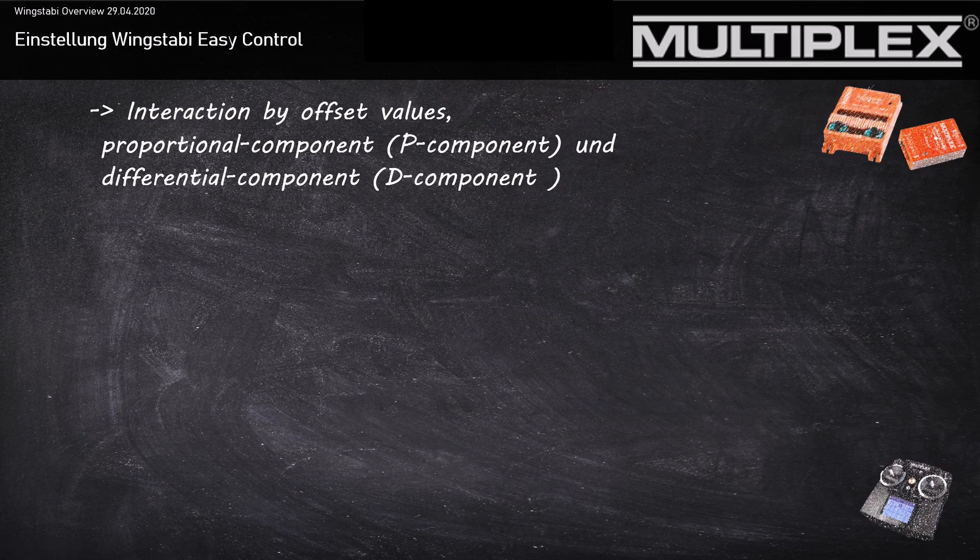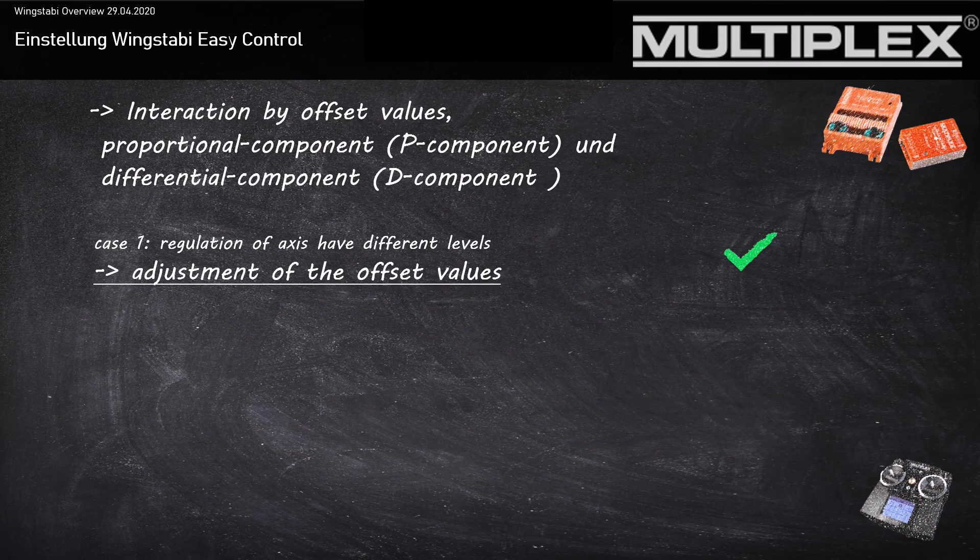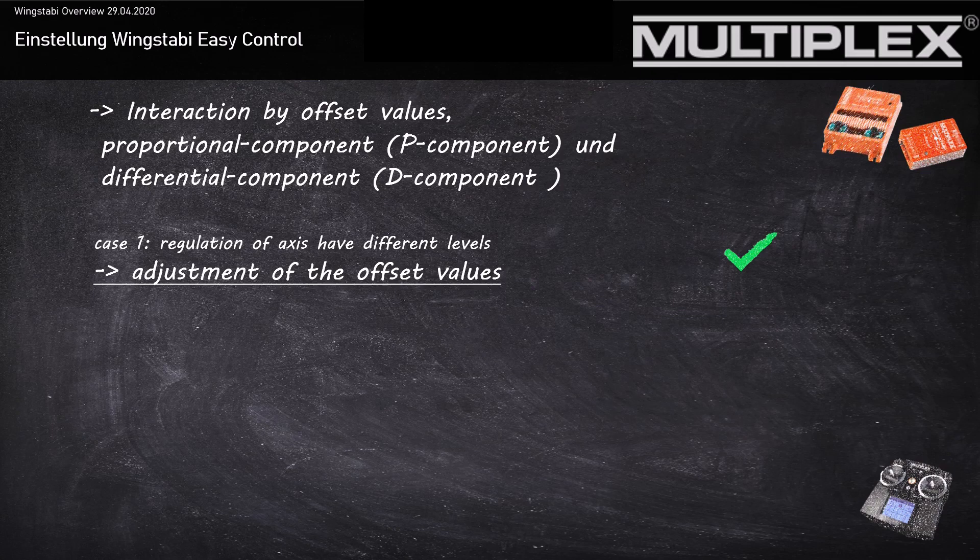Let's switch to the two left parameters of Wing Stubby Easy Control, the P-Rate and the D-Rate. I will show you with some easy examples how the interaction of the offset, the P-Rate and the D-Rate has an influence. So, case 1. Imagine your gyro control of your different steering functions are very different. For example, you will feel the gyro control very much on the ailerons and in rudder you need much more. Here, the right step is to adapt the offset values of your gain. Do that in small steps, you will get your right setting.